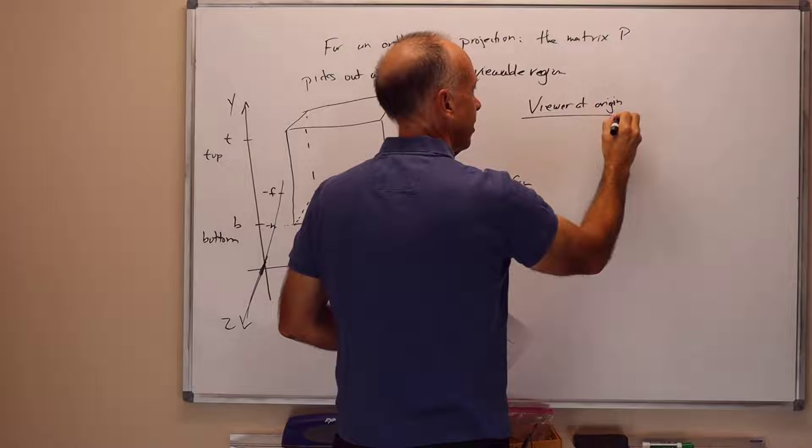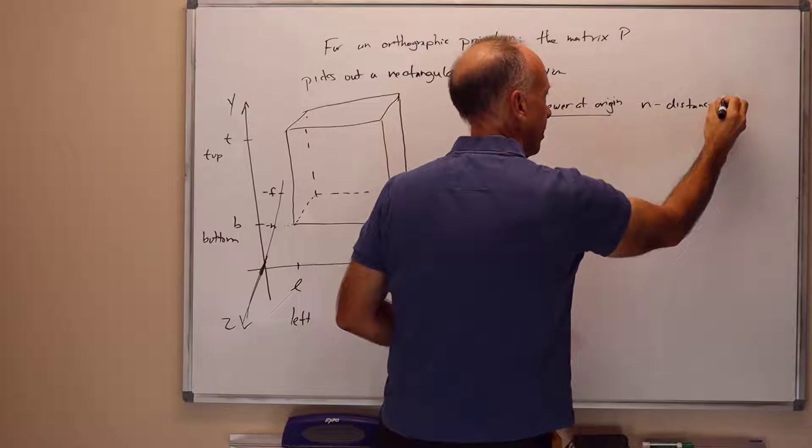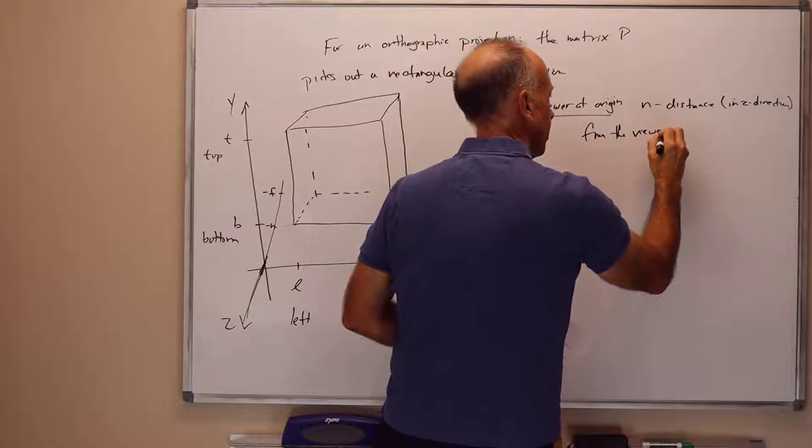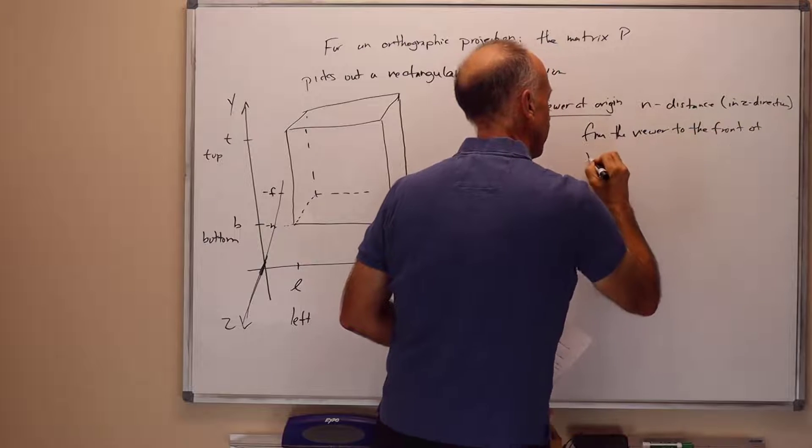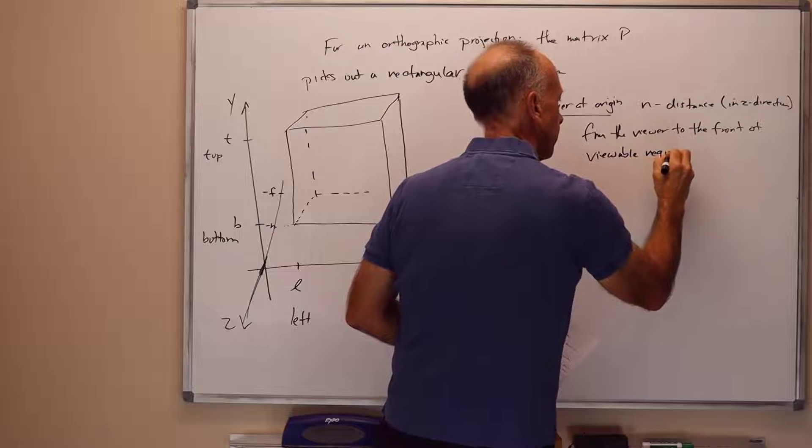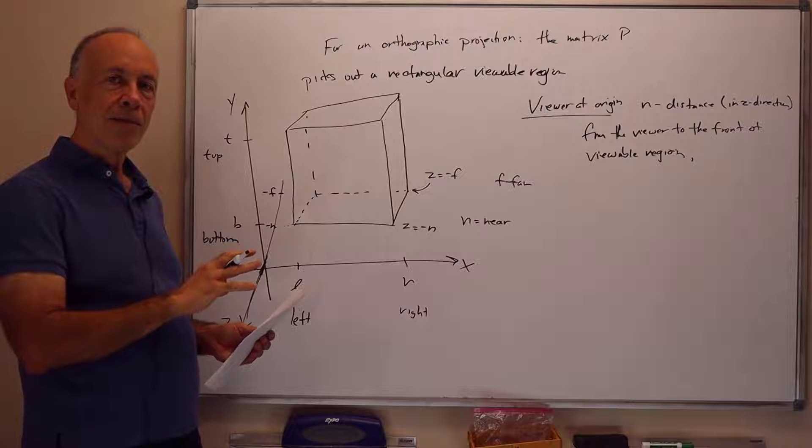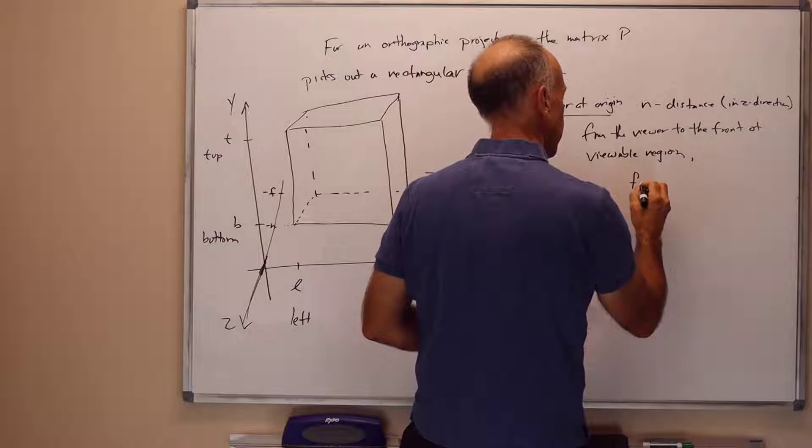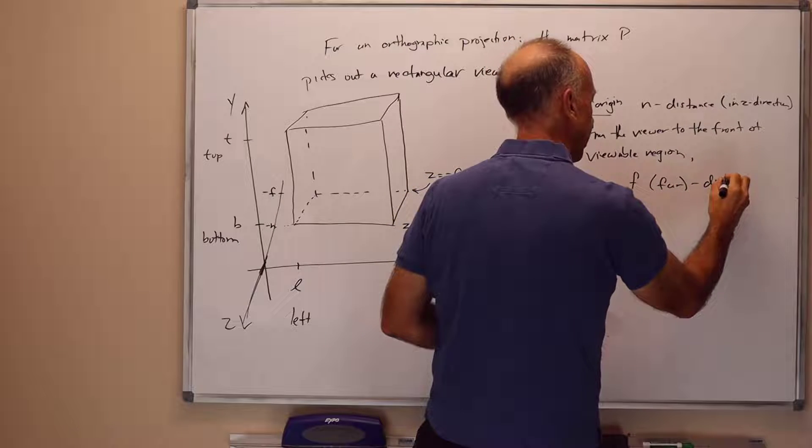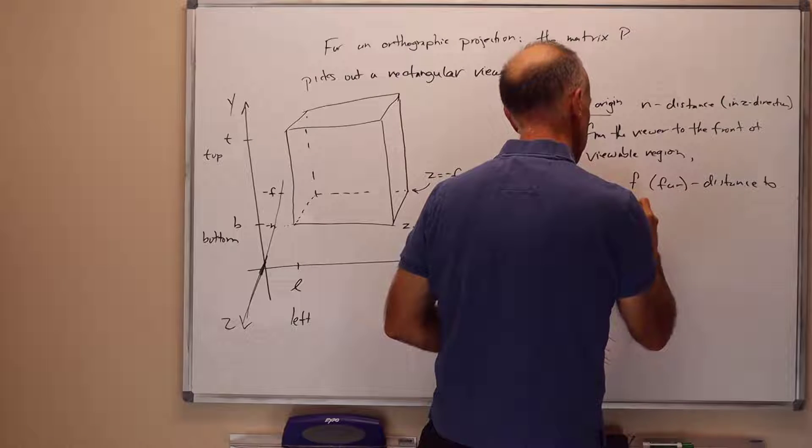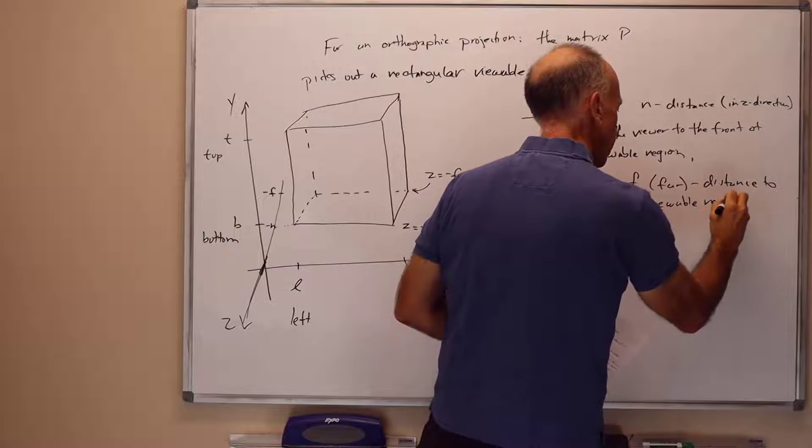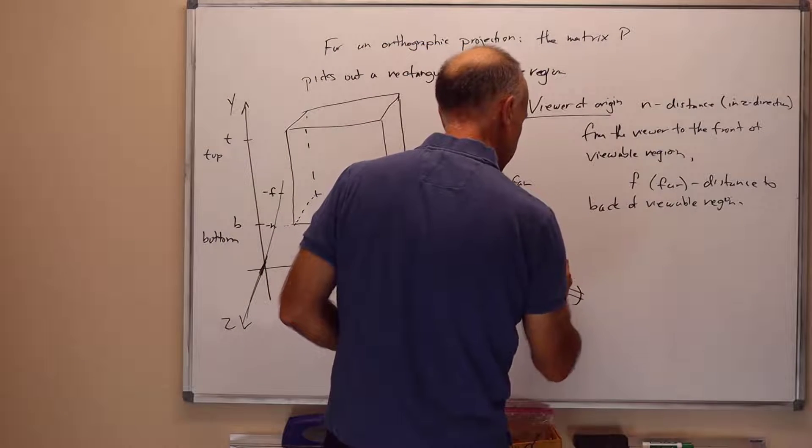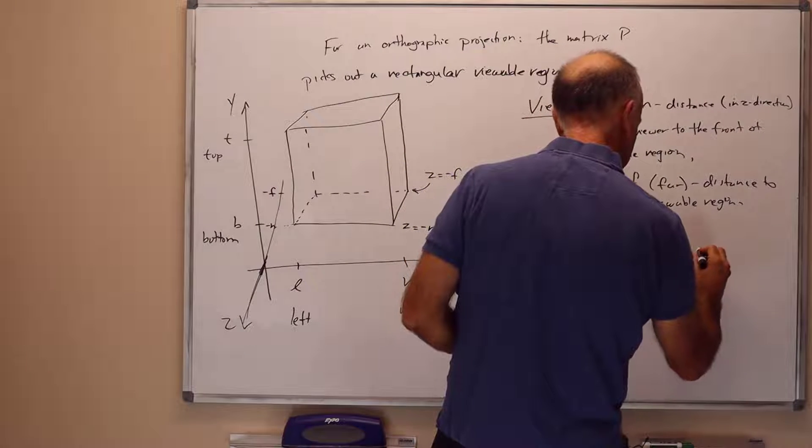And the z-value goes from minus n to minus f. The viewer we're thinking of is at the origin. And the strange sign conventions on n and f is n is the distance in the z-direction from the viewer to the front of the viewable region. And likewise, so n stands for near, it's a positive value typically. That tells you how far you go from the viewer until you reach the first viewable object.